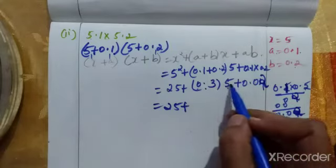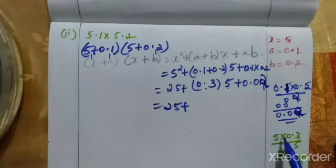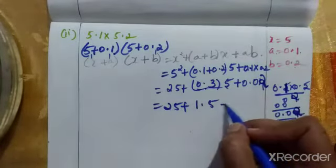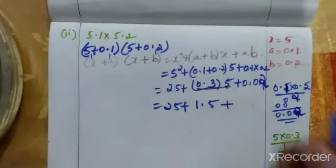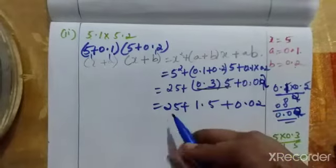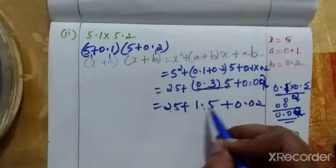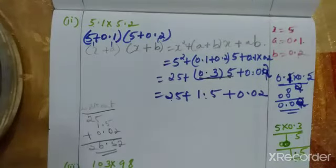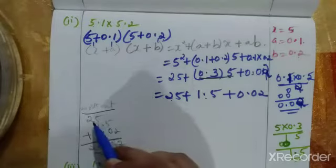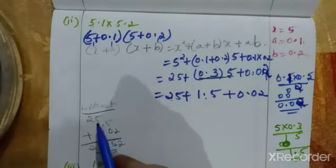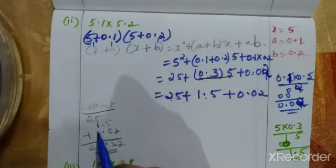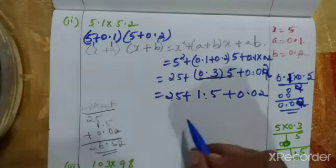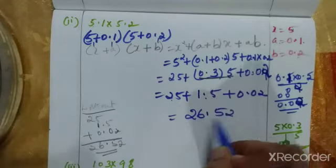Now multiply 0.3 into 5, which gives 1.5. So we have 25 + 1.5 + 0.02. Adding these together: 25 + 1.5 is 26.5, and 26.5 + 0.02 gives the final answer of 26.52.